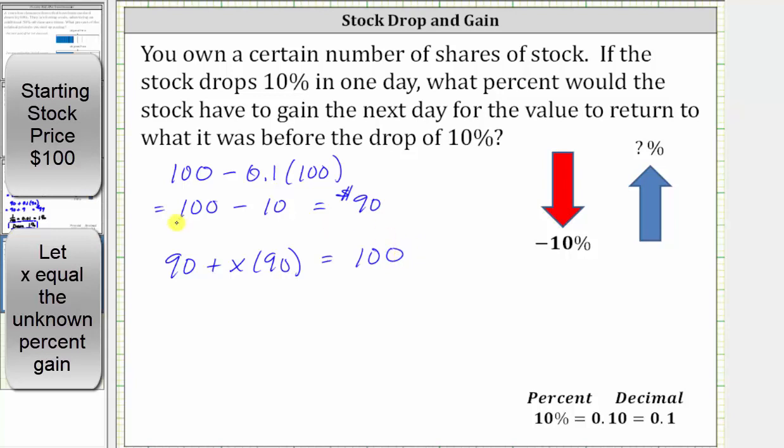Again, we have the price after the 10% drop of $90, plus x, the unknown percent gain times $90, must equal the original stock price of $100 per share. And now we solve for x. X times 90 is equal to 90x. Let's write the equation as 90 plus 90x equals 100.